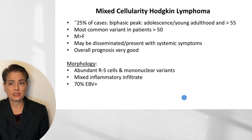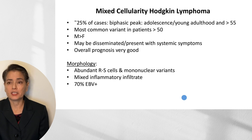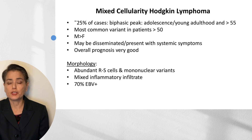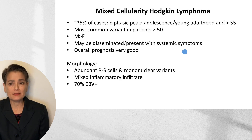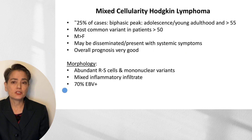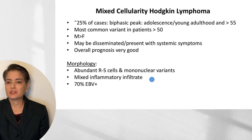Mixed cellularity Hodgkin lymphoma accounts for about 25% of cases and has a biphasic age peak: adolescence and young adulthood, then again in patients over the age of 55 — it is the most common variant in patients over 50 years. Males are affected more commonly than females. Unlike nodular sclerosis, which typically presents at stage one or two, mixed cellularity can present at stage three or four and may be disseminated, with systemic B symptoms including weight loss, fever, and night sweats. Despite advanced presentation, overall prognosis is very good. This is the variant in which we see abundant Reed-Sternberg cells and mononuclear variants, along with a mixed inflammatory infiltrate. About 70% of these cases are positive for Epstein-Barr virus.